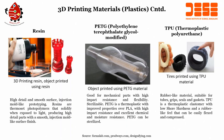For resins, PETG, and TPU: resin provides high detail and smooth surface finish, suitable for injection mold-like prototyping. Resins are thermoset photopolymers that solidify when exposed to light, producing high detail parts. PETG is used for good mechanical parts with high impact resistance and flexibility. TPU is rubber-like, suitable for printing tires, tubes, grips, and seals — a thermoplastic elastomer with low shore hardness that can be easily flexed and compressed.